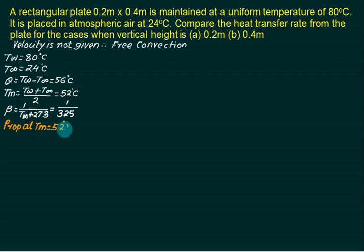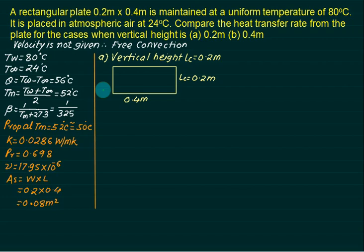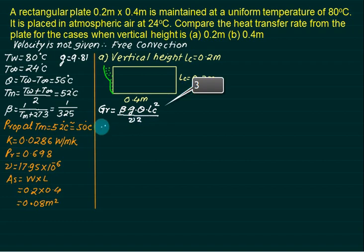Properties are not given, so collect air properties at approximately 50°C from tables: k = 0.0286 W/mK, Pr = 0.698, ν = 17.95×10⁻⁶ m²/s. Plate area = 0.2 × 0.4 = 0.08 m². Case 1: vertical height = 0.2 m, so Lc = 0.2 m. Grashof number = β × g × θ × Lc³ / ν² = (1/325) × 9.81 × 56 × 0.2³ / (17.95×10⁻⁶)² = 4.19 × 10⁷.